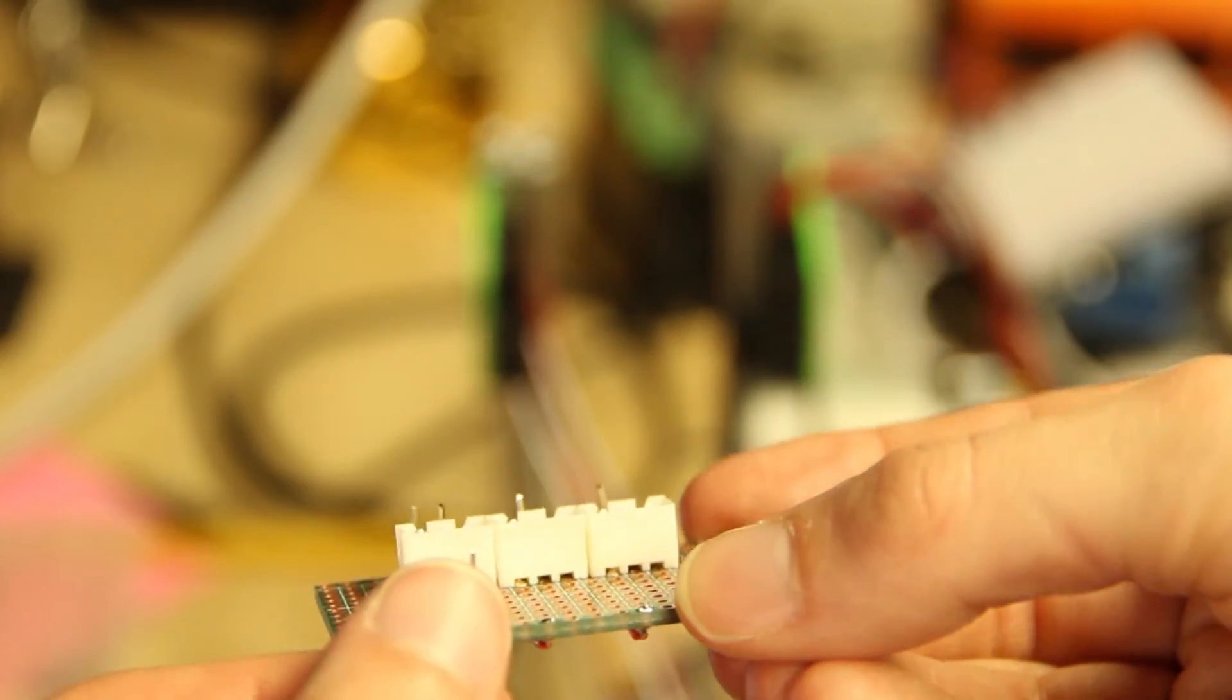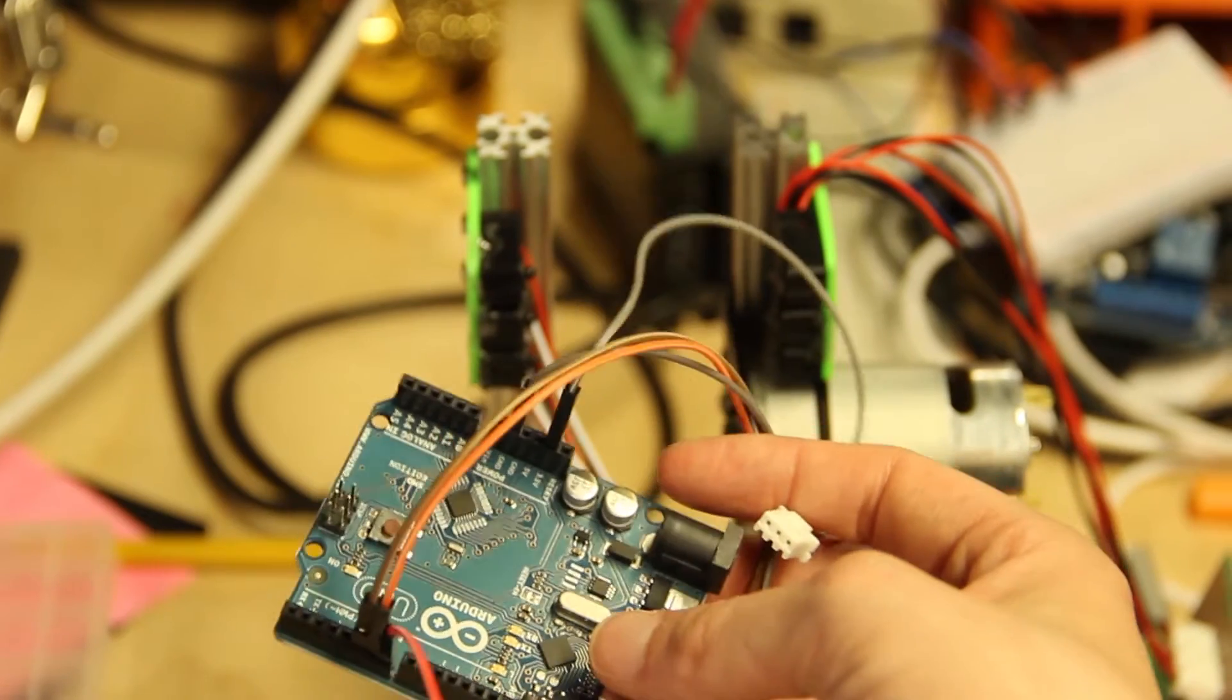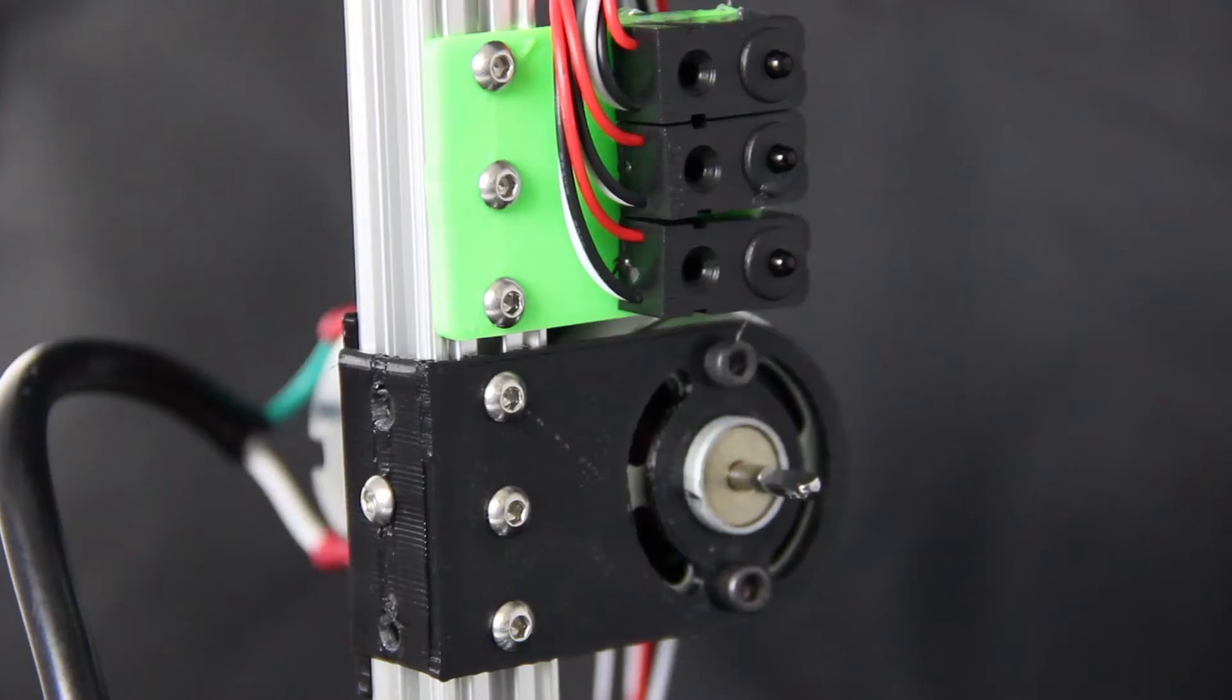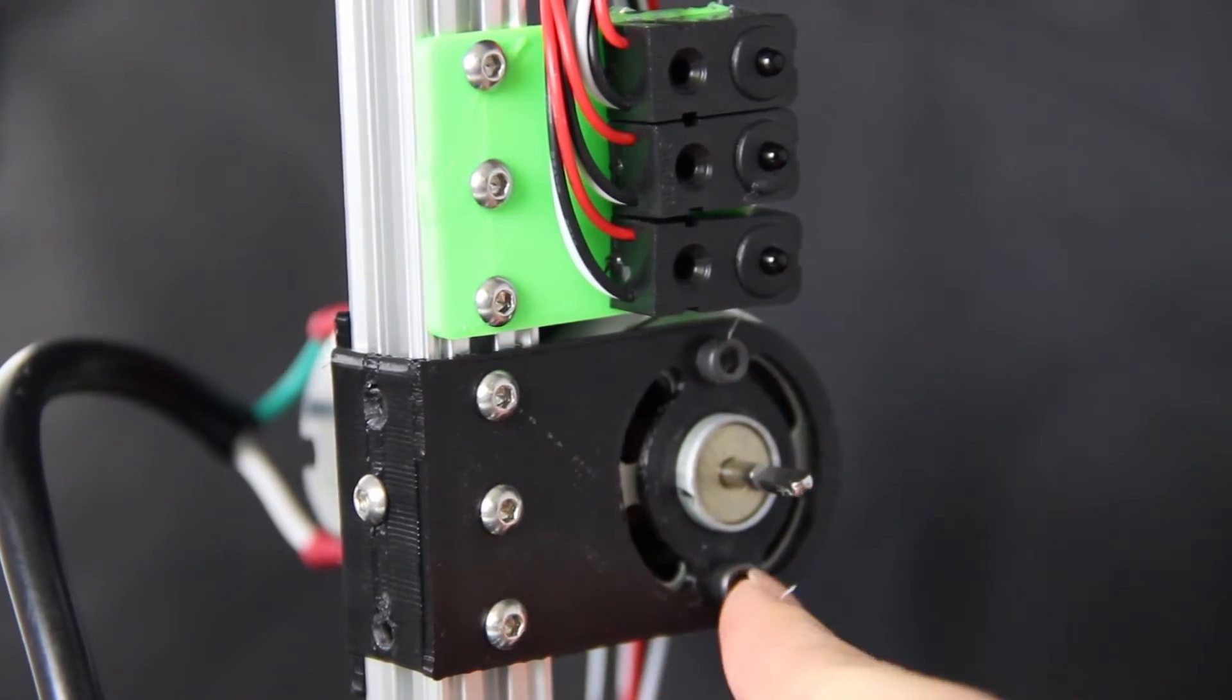Instead of hooking up a terminal to the power and ground rails, we used headers. This way we could plug into the Arduino's power and ground. The motor is mounted to the structure with two brackets and is attached to the front bracket with two screws.